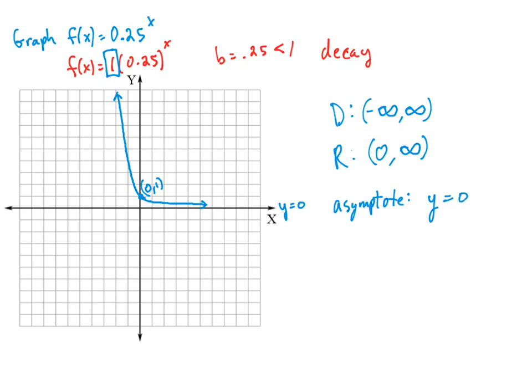If we transform this function in any way, the domain will always be all real numbers, but the range could change because if this graph is shifted up or down, the range will change. The asymptote could also change if the graph is shifted up or down.